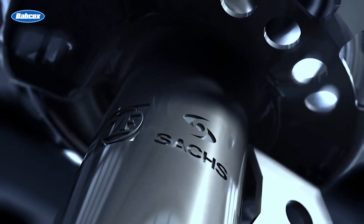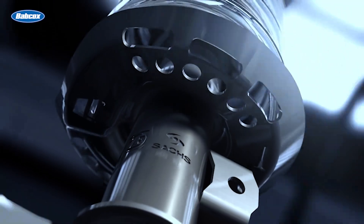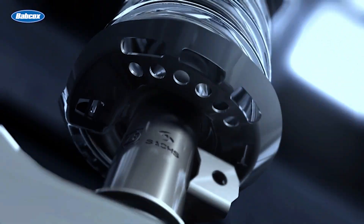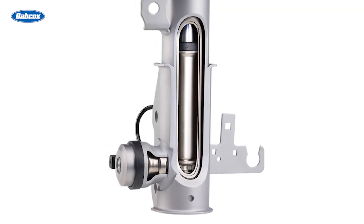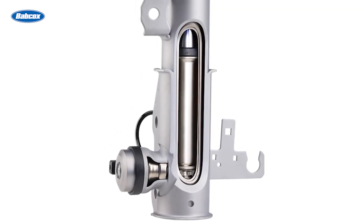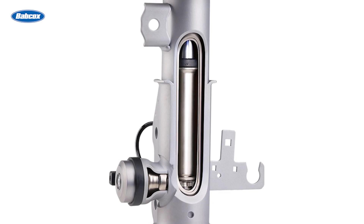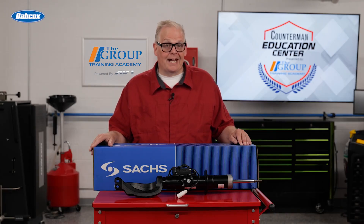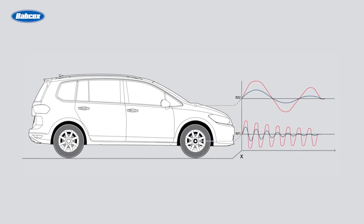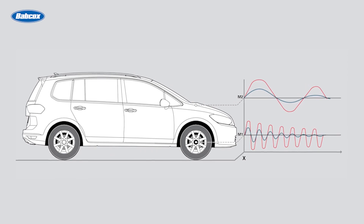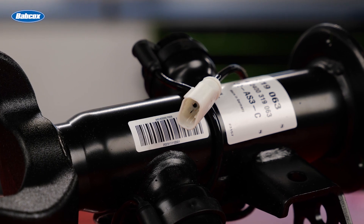A lot. What makes these units unique are valves with variable orifices. These valves regulate the flow between the chambers on either side of the piston. These units can adjust in milliseconds and are integrated with other vehicle safety systems like ABS and stability control.